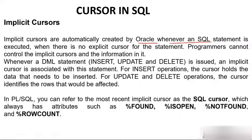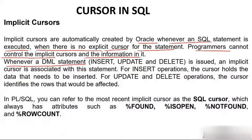Oracle implicitly — that means automatically — creates the cursor. The programmer does not need to create it. When there is no explicit cursor, implicit cursors are automatically created for the statement. The programmer cannot control the implicit cursor or the information in it. Whenever a DML statement like insert, update, or delete is issued, an implicit cursor is automatically associated with that statement.